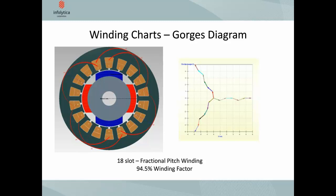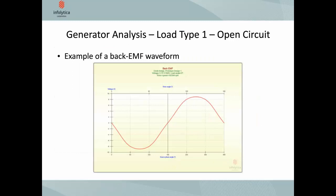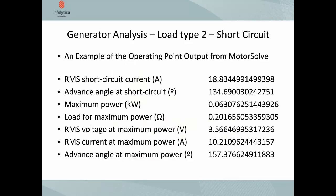Now we go on to generator analysis. The first thing to look at is the back EMF waveform — this is the open circuit load type. The maximum of that back EMF determines the maximum power and voltage we can output from our generator. Here is an example of the short circuit analysis showing quantities such as short circuit current, advance angle at short circuit, maximum power for the machine, and various other quantities useful for characterizing your generator.